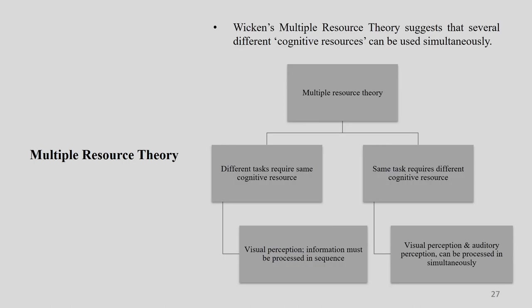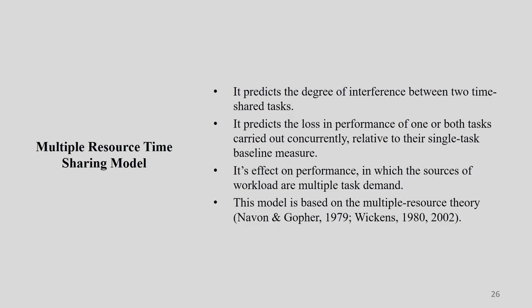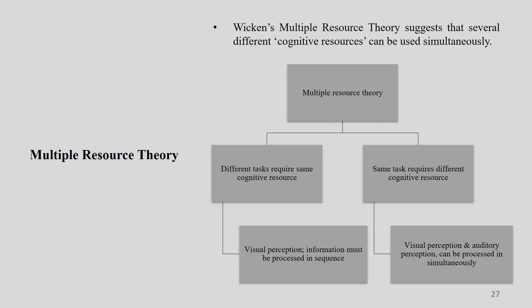This multiple resource time sharing model is based on multiple resource theory, which was first introduced in 1979 and has had many modifications over time. Professor Wickens, in 1980 and in a modified version in 2002, said that multiple resource theory suggests that several different cognitive resources can be used simultaneously. It can be of two types: different tasks requiring the same cognitive resources, or the same task requiring different cognitive resources.